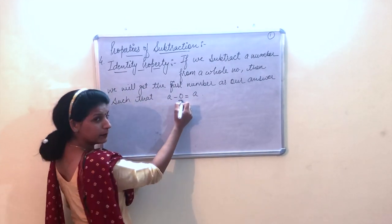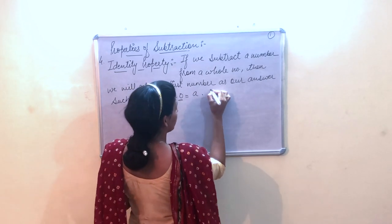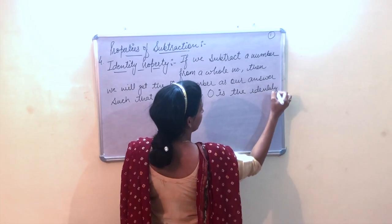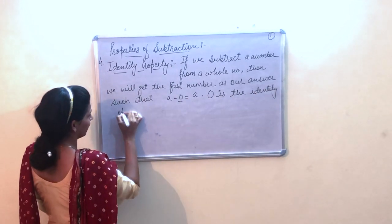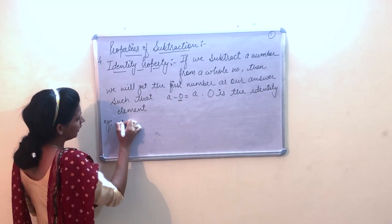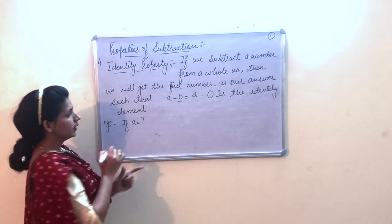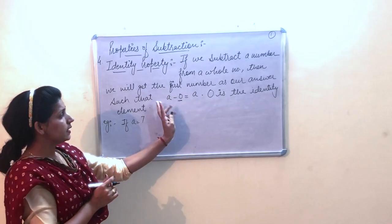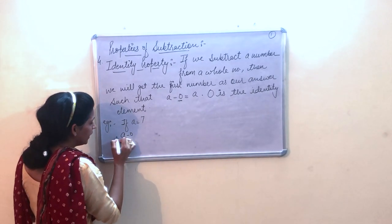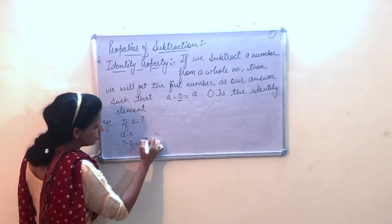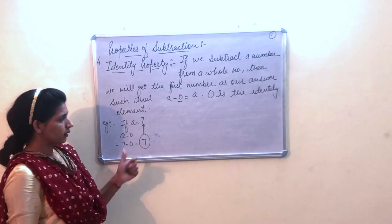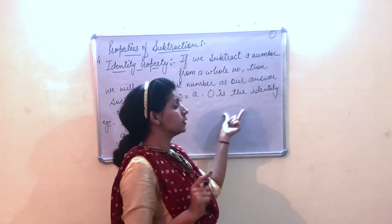If a is equal to 7, then a minus 0 is 7 minus 0, which equals 7. And 7 is the value of a, so the property is satisfied. This means 0 is the correct identity element for subtraction.